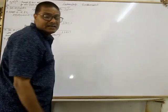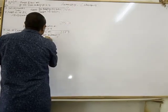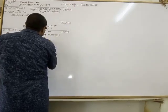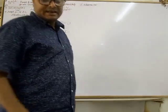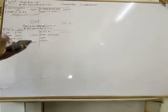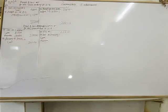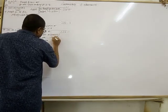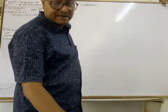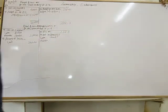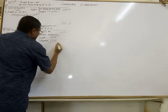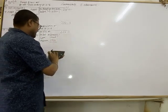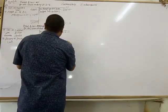Interest on drawings — Lata's drawings during the year: rupees 36,000. Interest on drawings: 36,000 at the rate of 8% for 6 months equals rupees 1,440. Mamta's drawings: 48,000 at the rate of 8% for 6 months equals rupees 1,920. Total interest on drawings: 1,440 plus 1,920 equals rupees 3,360.